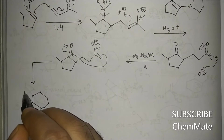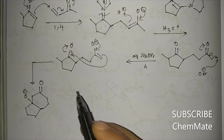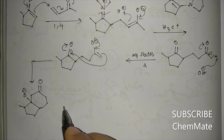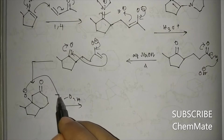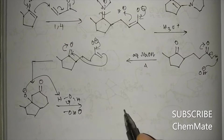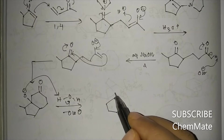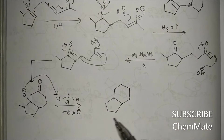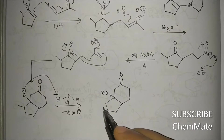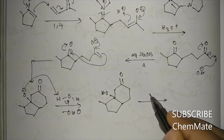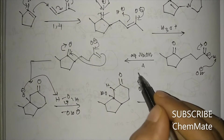The aldol intermediate has an O-minus and a keto group with a methyl group. It takes a proton to form a beta-hydroxy ketone, with the OH group now present in the six-membered ring.